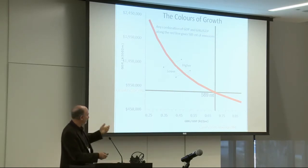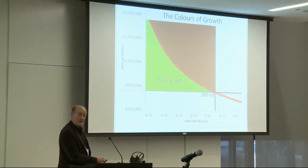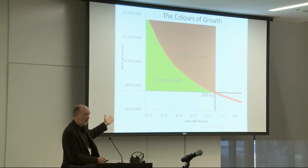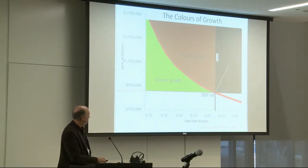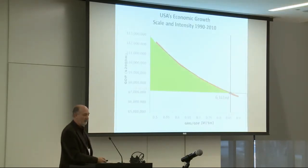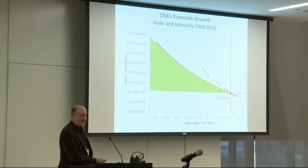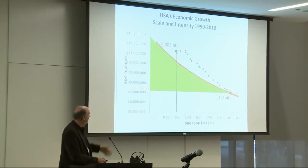Any combination of intensity and scale along the red line gives the same output of greenhouse gases. I use this to define green growth. If we started in 1990 at the 589 megaton mark, green growth would be a transition into that green triangle. There's also brown growth — a larger, more efficient economy, but efficiency not increasing fast enough to compensate for the increase in scale. There's black growth and degrowth as well. Here's the U.S. situation starting in 1990: year after year it's a world of brown growth — economic growth, but intensity declining, just not fast enough.